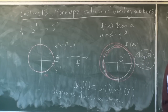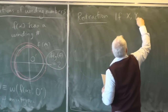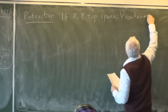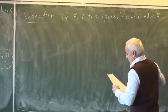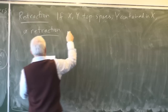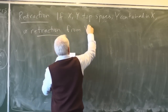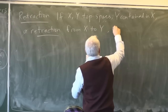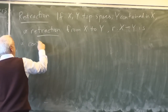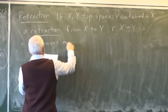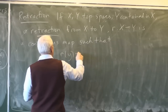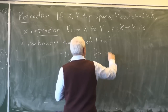Let's define the notion of a retraction. If X and Y are topological spaces and Y is contained in X, then a retraction from X to Y — call it r — is by definition a continuous map which satisfies that r of y equals y for y belonging to Y.